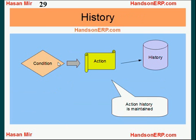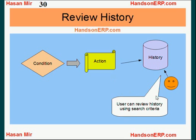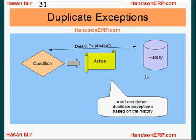When a condition is met and action is taken, these actions are stored in the database as history, which users can review using search criteria. Oracle Alert is capable of detecting if an exception is found for the first time or whether it has already been found in the past. That is why history is maintained in the system, and you can decide when to parse the history. Sometimes you may not want to be notified on duplicate exceptions, and you can tell Oracle Alert module to suppress notifications on duplicate exceptions.